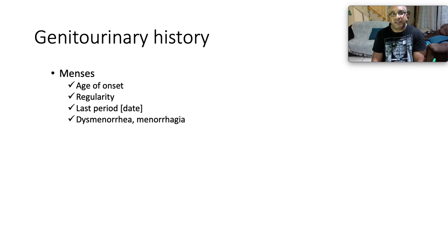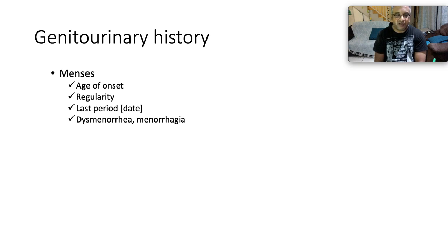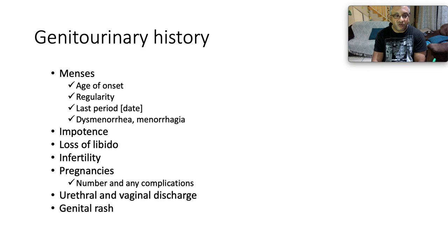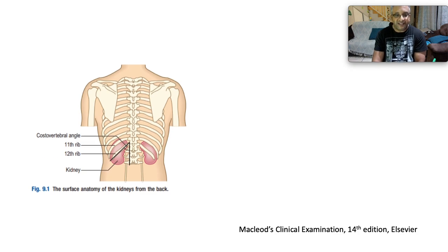For the genital portion of the genitourinary history, inquire about menses in females — the age of onset (menarche), regularity of periods, last period date, dysmenorrhea, and menorrhagia. In men, particularly diabetics, inquire about impotence, loss of libido, and infertility. In females, establish parity and gravidity and any pregnancy complications. Also ask about urethral and vaginal discharge and any genital rash.